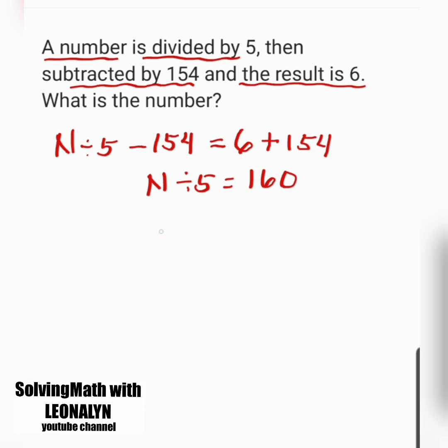Next, to isolate N, let's transfer divided by 5 to the other side and this will become times 5. So therefore, N equals 160 times 5 and that is 800. This is the answer.